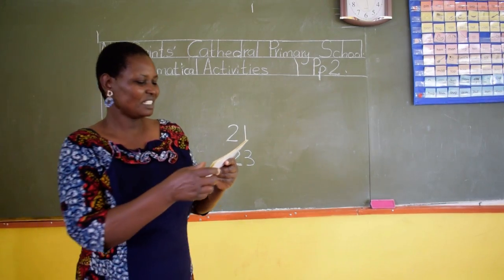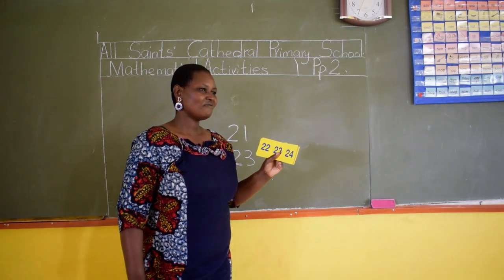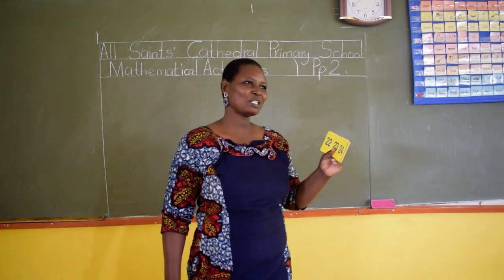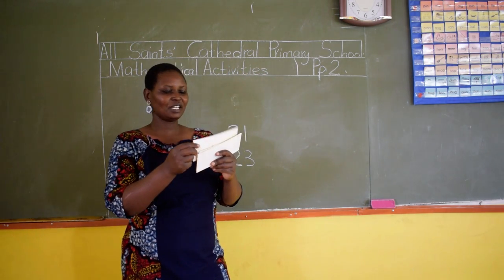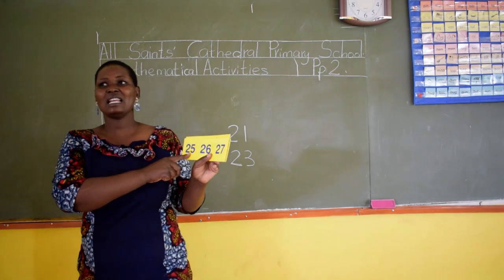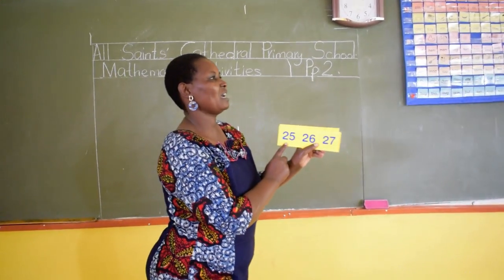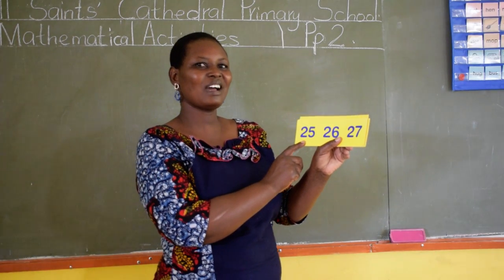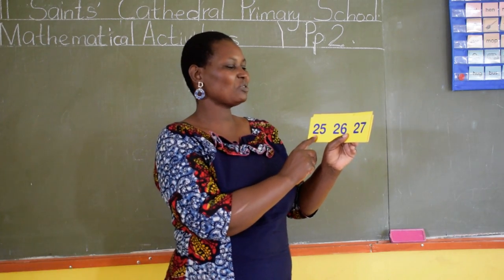Joy, which number comes after number 23? Can you tell us, Joy? Very good. The number that comes after number 23 is number 24. Number 24 comes after number 23. Which number is this? Who can tell us the name of this number? This is number 25. That is wonderful. We deserve to be appreciated. Can you clap for her?